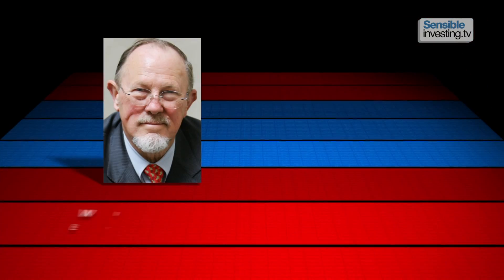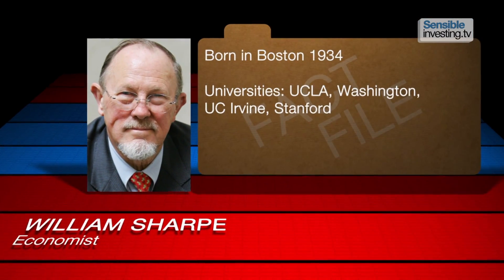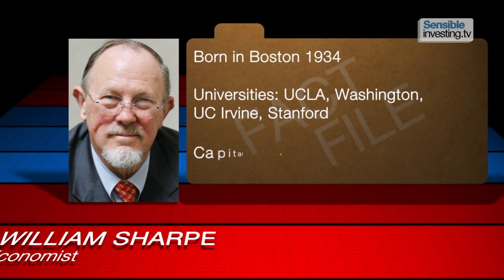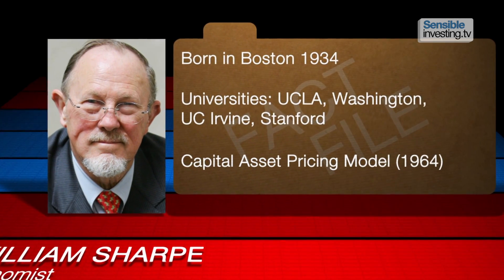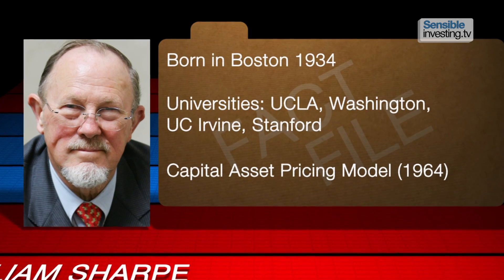A lot of his theorizing on risk and return were then taken up by William Sharpe, who thought: what if everybody uses this model? The key contribution he made was that the optimal portfolio for everyone turns out to be the market-weighted portfolio. William Sharpe was an economist at the University of Washington who in 1964 had a paper published in the Journal of Finance outlining the capital asset pricing model.